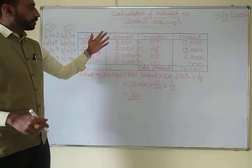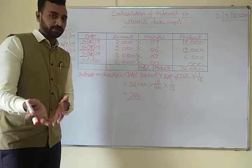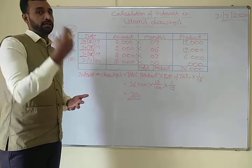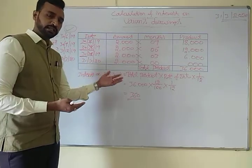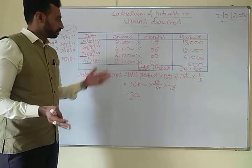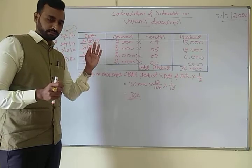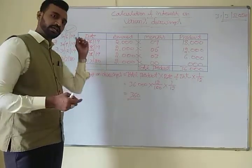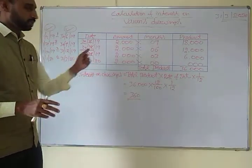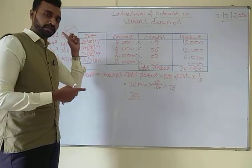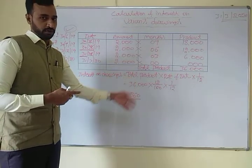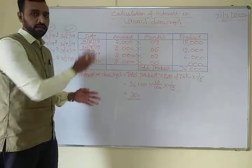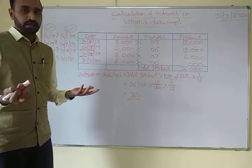So this is the end of this problem. We now know how to calculate interest on drawings when he withdraws at the end of each quarter. In the earlier class, the same kind of problem was solved but with withdrawal at the beginning of each quarter. The only difference between the two problems is beginning versus ending of each quarter — there is no other change. This is the final class of this topic; we will start a new topic in the next session. Thank you.